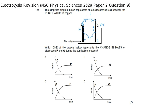The difference between options A and C is the starting mass of electrode P. Option A shows electrode P starting with a non-zero mass, while option C shows it starting at zero. Reduction cannot take place unless there is already an electrode present to host the electrons. Therefore electrode P must have some initial mass, and the correct answer to question 1.9 is option A.